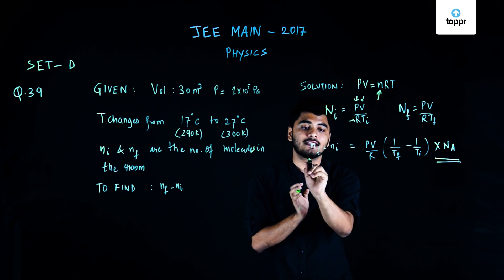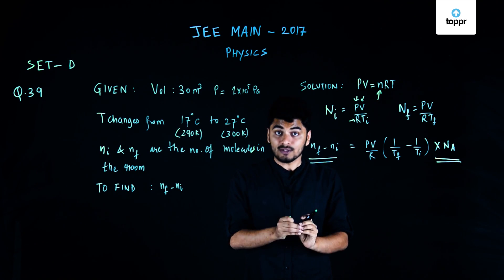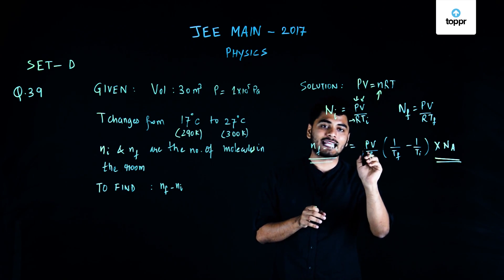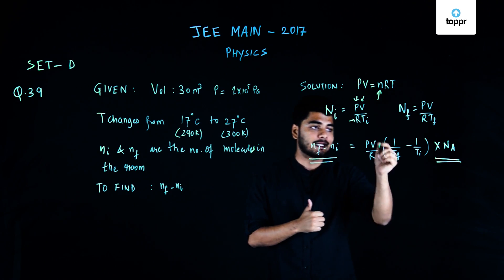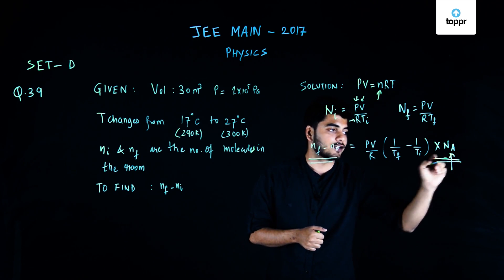Now, I get the final formula here, that is the difference between the final and the initial number of molecules in the room would be equals to pressure times volume by the gas constant into 1 by final temperature minus 1 by initial temperature into Avogadro's constant.